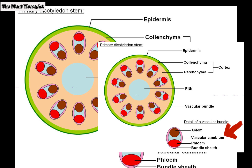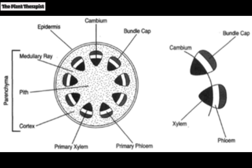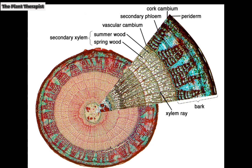The procambium produces only primary xylem and phloem, but later a vascular cambium arises between these two primary tissues and adds secondary xylem and phloem to the vascular bundle. In some plants the cambium extends between the vascular bundles, appearing as a narrow ring producing not only the conducting tissues within the bundle but also the parenchyma cells between them.